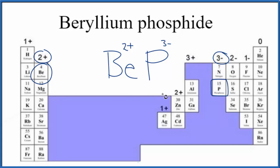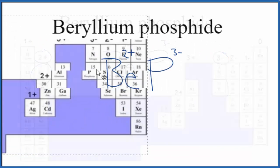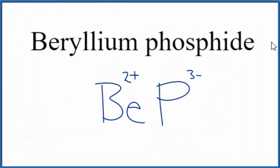We have the ionic charges for each element. Beryllium phosphide is a neutral compound—the word ion doesn't follow the name. Since it's neutral, these charges have to add up to zero. We need a net charge of zero.